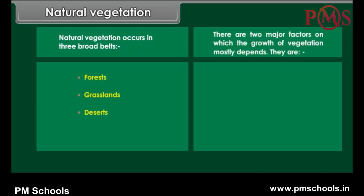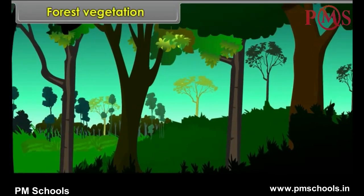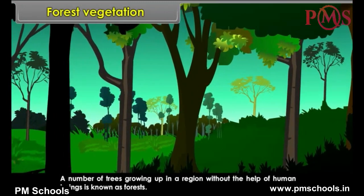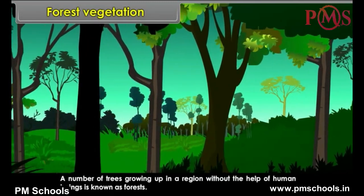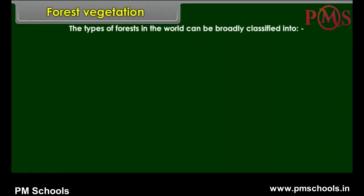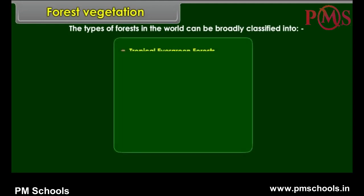There are two major factors on which the growth of vegetation mostly depends: temperature and moisture. Forest Vegetation. A number of trees growing up in a region without the help of human beings is known as forest. The types of forests in the world can be broadly classified into tropical evergreen forests, tropical monsoon forests, temperate evergreen forests, the Mediterranean type of forests, temperate deciduous forests, and coniferous forests.